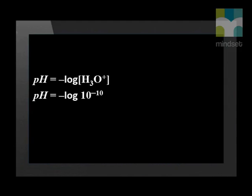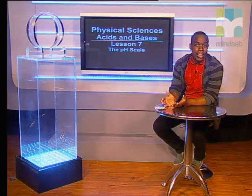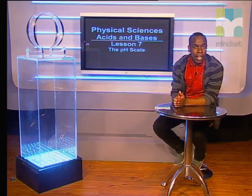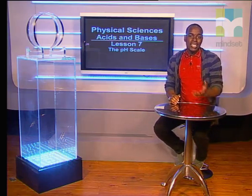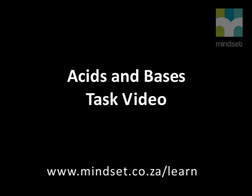10 to the exponent negative 10 is substituted into the pH equation and the pH of the basic solution is 10. This brings us to the end of our lesson on the pH scale of an acid and a base. You'll also find more information about acids and bases at www.mindset.co.za/learn. Remember to try some of the questions in the task video too. Goodbye.